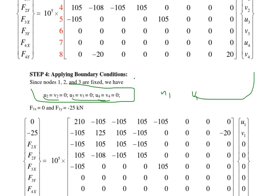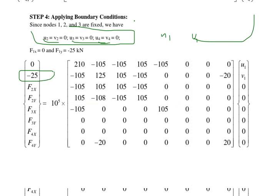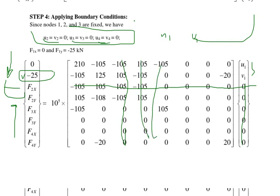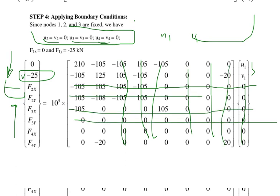After applying boundary conditions, all rows and columns corresponding to zero displacements are eliminated from the global stiffness matrix. This reduces the system to a 2×2 matrix involving only U1 and V1. The force vector on the left side has [0, −25] and the stiffness coefficient 10⁵ is factored outside the reduced matrix. Solving this reduced system gives us the values of U1 and V1.